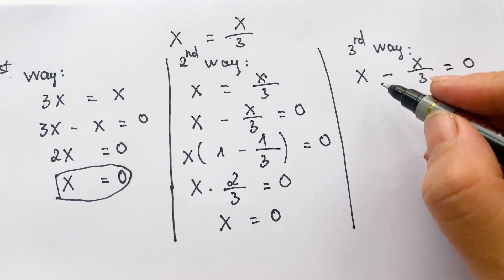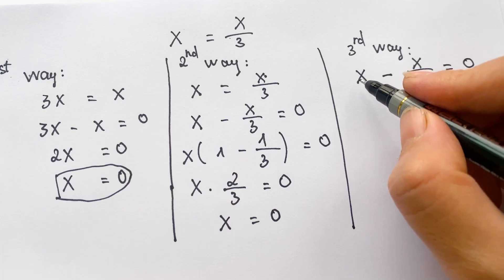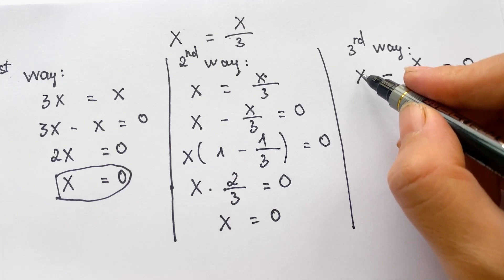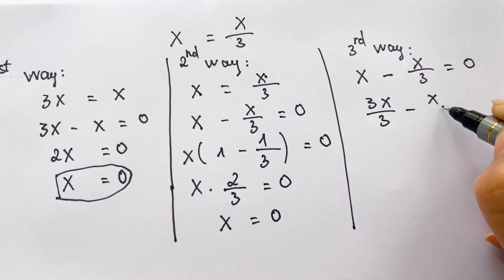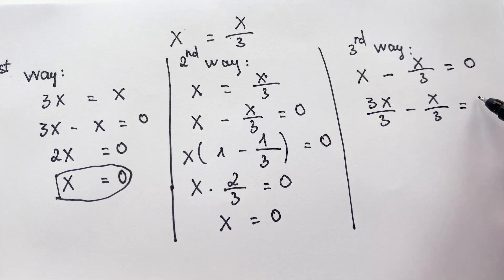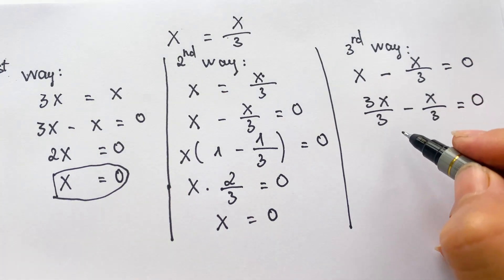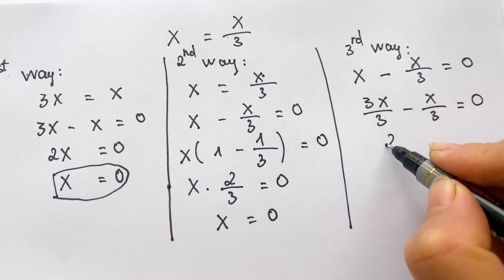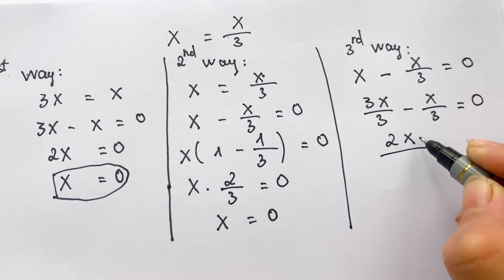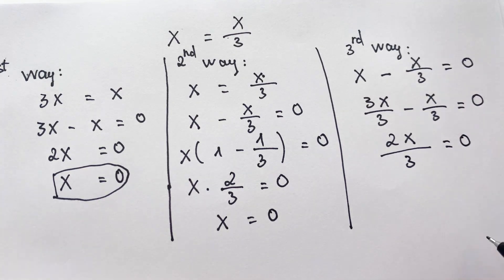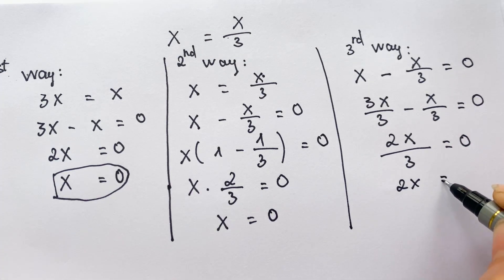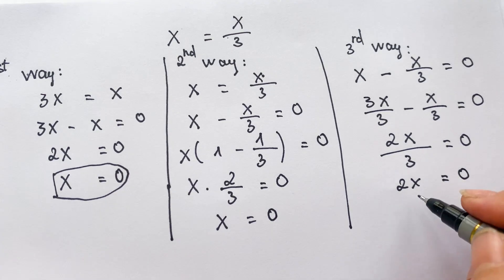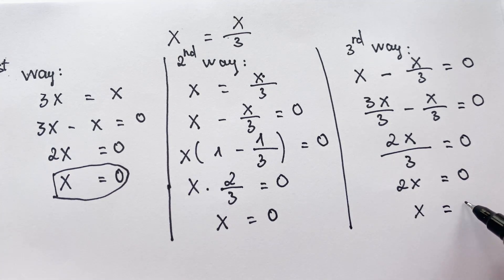We need to find the same denominator, so we multiply x by three over three to get three x over three, giving us three x over three minus x over three equals zero. Then we have two x over three equals zero. With a fraction equal to zero, everyone can see the numerator: two x equals zero, so x equals zero.